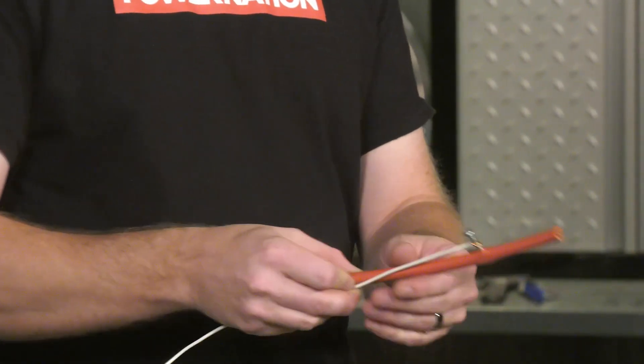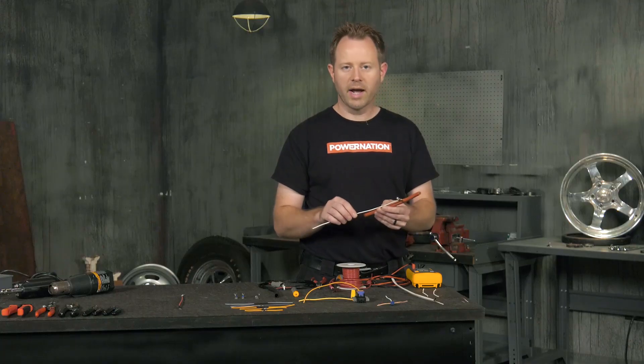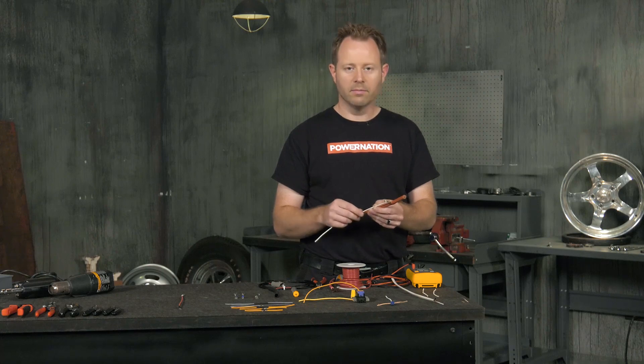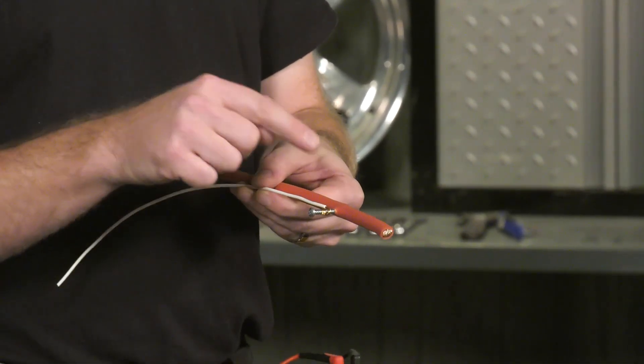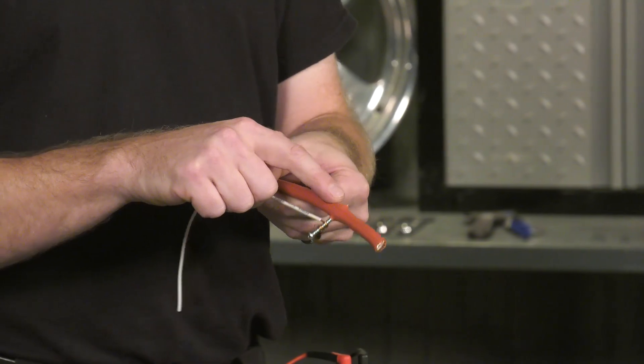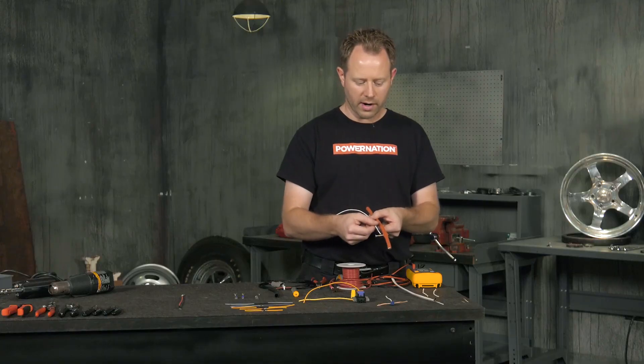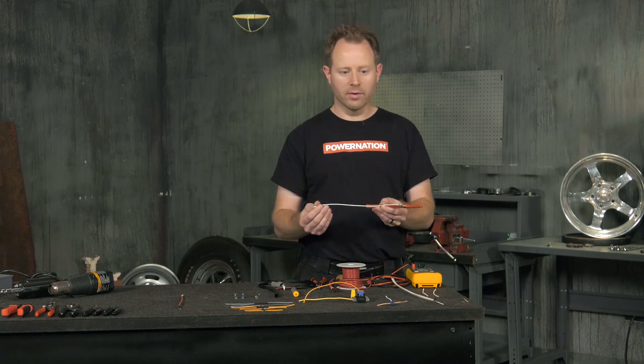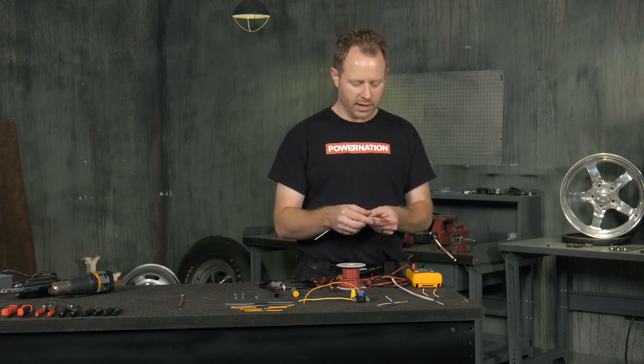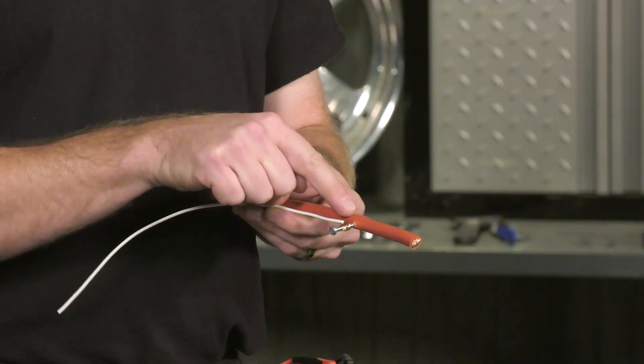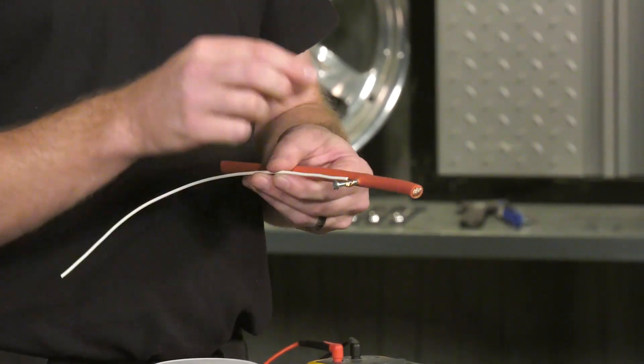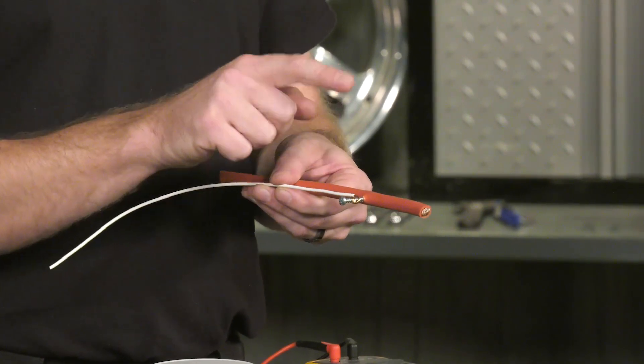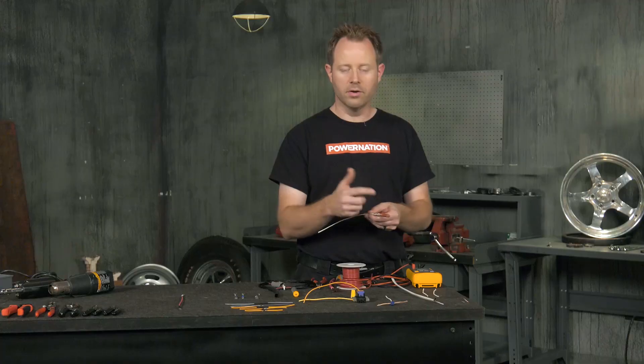Our next situation here, this was a case where it looks like somebody needed some power and they took the most convenient route to get that power as they tapped into a battery cable with just a screw. They ran a screw directly through the insulation. It popped out the other side and they just looped their wire around that screw and that'll give them some power. But once you start drawing current through that, you're going to have some connection issues.